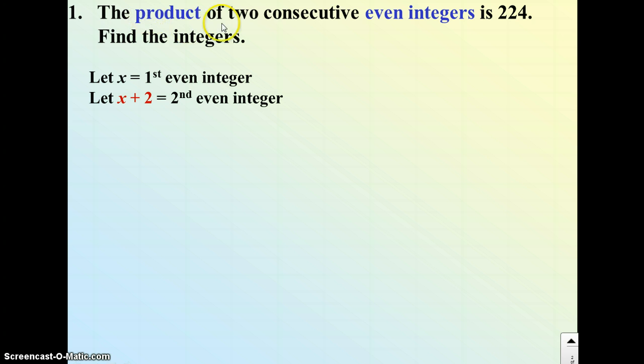The product of those two integers is 224, so I can now make an equation. First integer times the second integer should equal 224. That's a quadratic equation. Expand the left side: x squared plus 2x equals 224. Set it equal to 0.